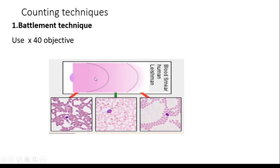Then, counting techniques. Battlement technique. Examine the blood film under the high power objective. Select an area where the red cells are just beginning to overlap. Now, we will see the different parts of the smear.